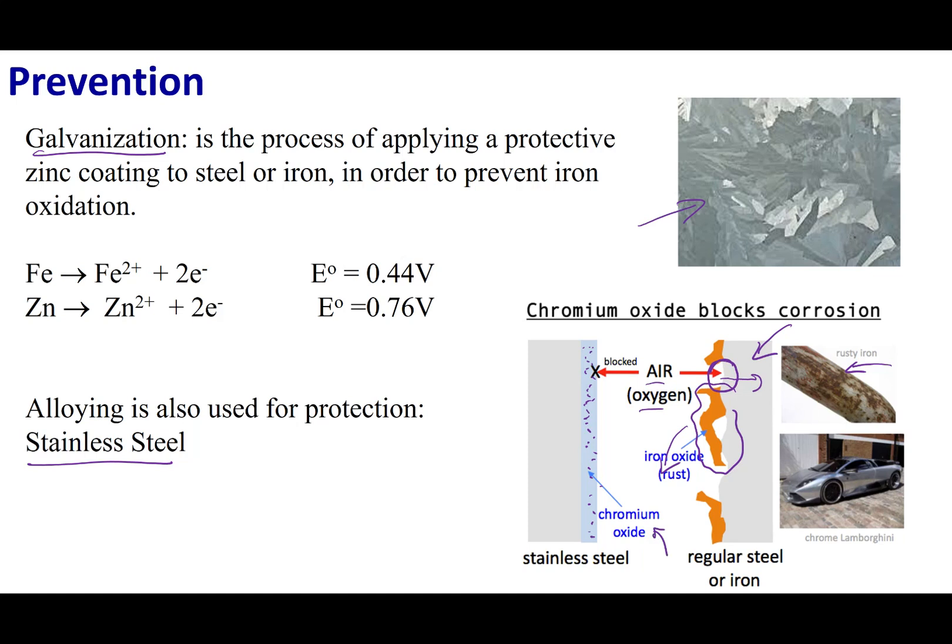So what happens is that when chromium oxidizes, it makes this protective layer and air is blocked from reaching a new surface of iron or stainless steel. And so in this way, I get to see my stainless steel because it's nice and clear that chromium coating, and I can protect it from further damage.